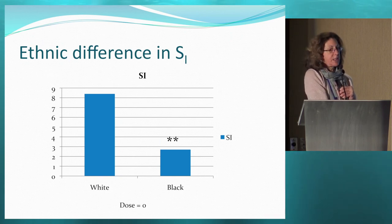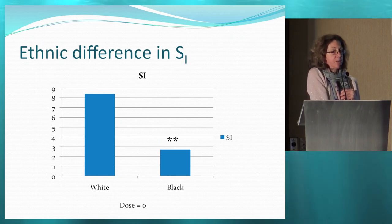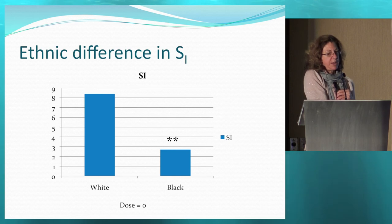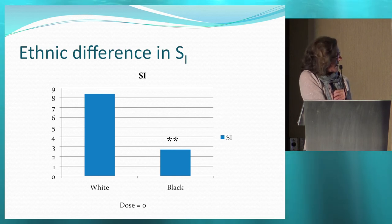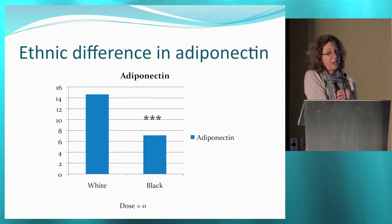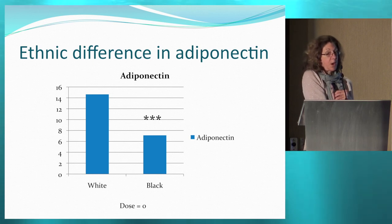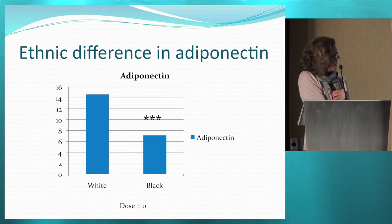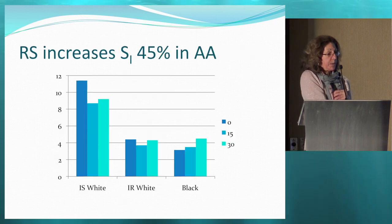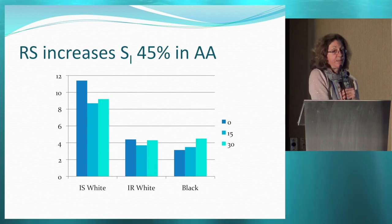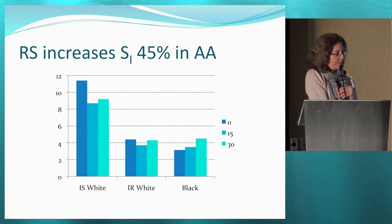Looking at change in insulin sensitivity with starch treatment in black and white women separately — these are unadjusted data, and we're not really powered to do this analysis — we broke it into three groups: insulin-sensitive white, insulin-resistant white, and black. This is more of a qualitative analysis, but interesting. We found almost a dose response with an increase in insulin sensitivity in the black women, going up at 15 and more at 30 grams. This suggests the significant effect we saw at the higher dose may have been driven by the black women.